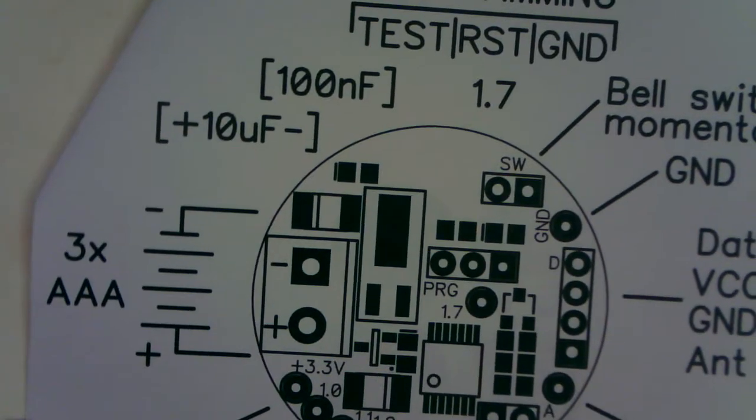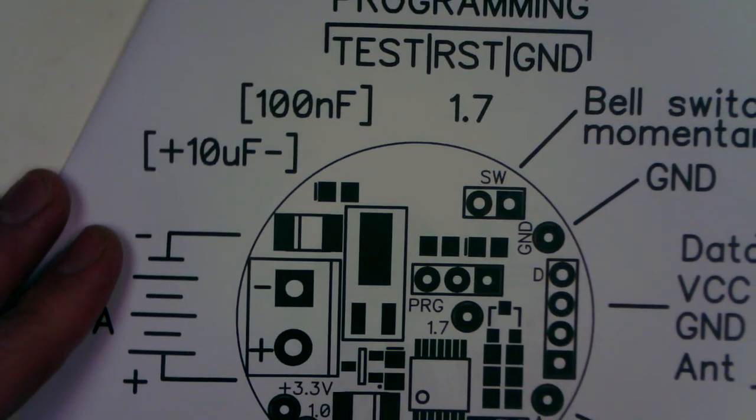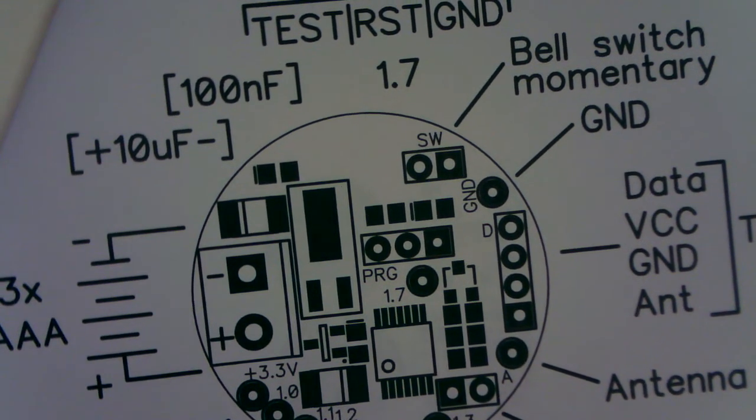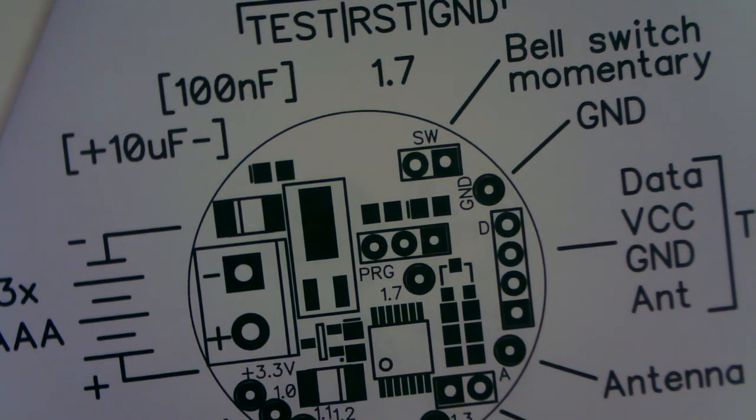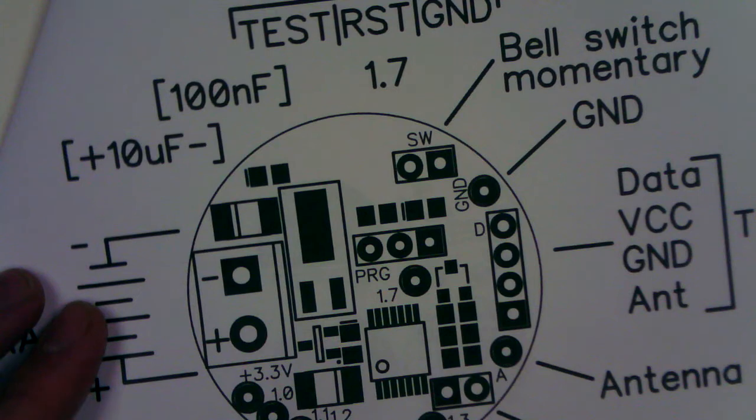This is what the board looks like. I've gone for a round board this time around. I've never tried making a round PCB before, but I've sent this off to Open Source Hardware Park for manufacture. It'll cost about seven bucks, zero dollars postage, and I'll get three copies of this board.